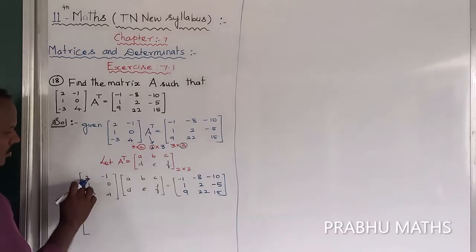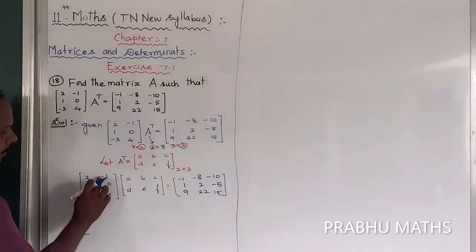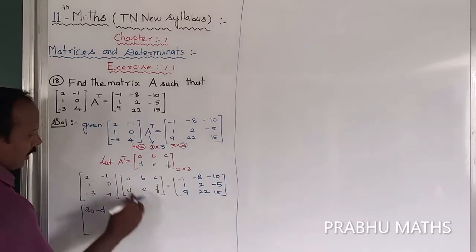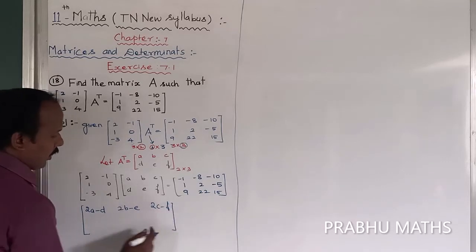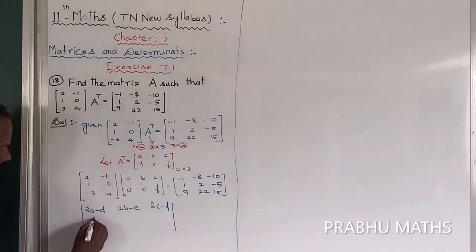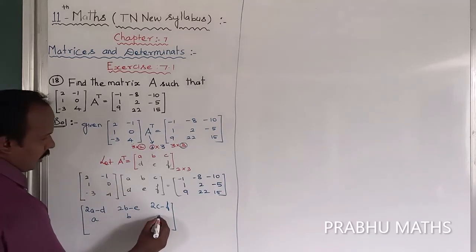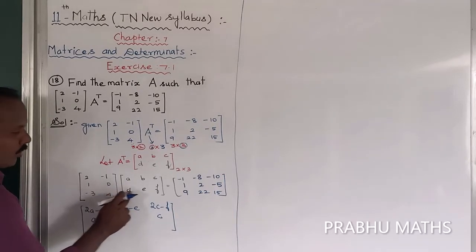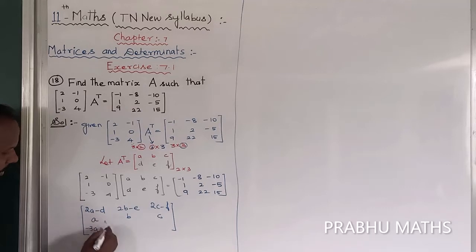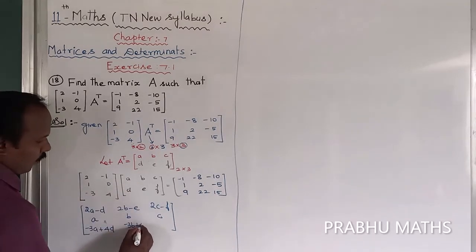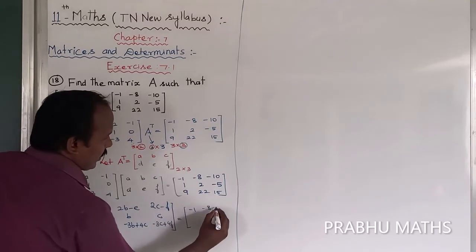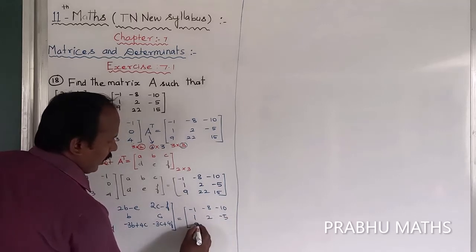From matrix multiplication: First row, first column gives 2A minus D. First row, second column gives 2B minus E. First row, third column gives 2C minus F. Second row gives A, B, C. Third row gives -3A plus 4D, -3B plus 4E, -3C plus 4F. These equal the entries -1, -8, -10, 1, 2, -5, 9, 22, 15.